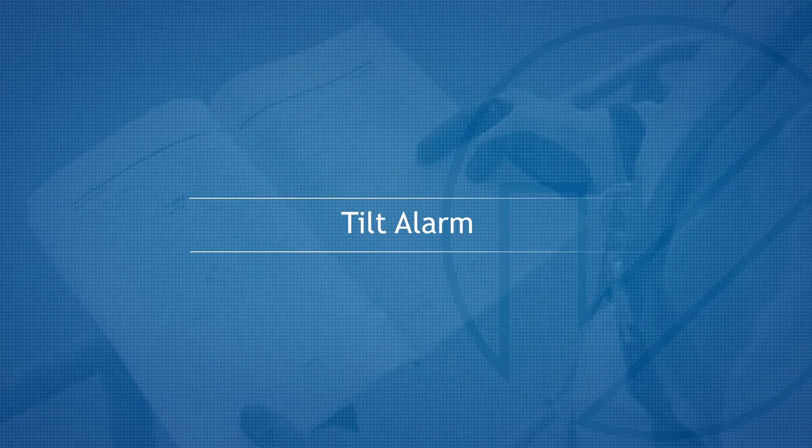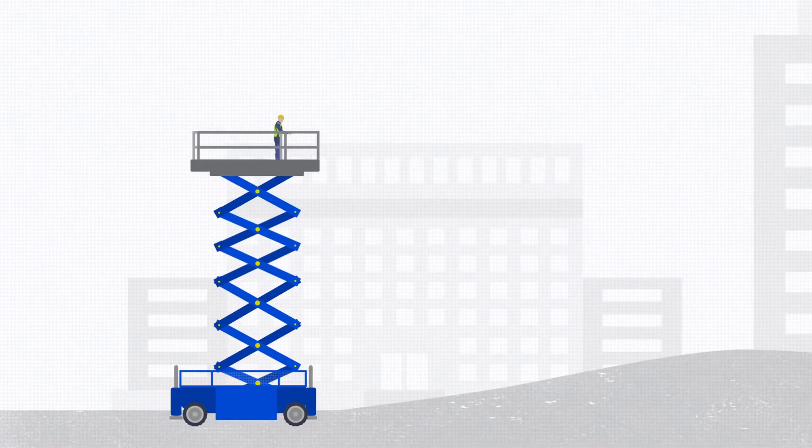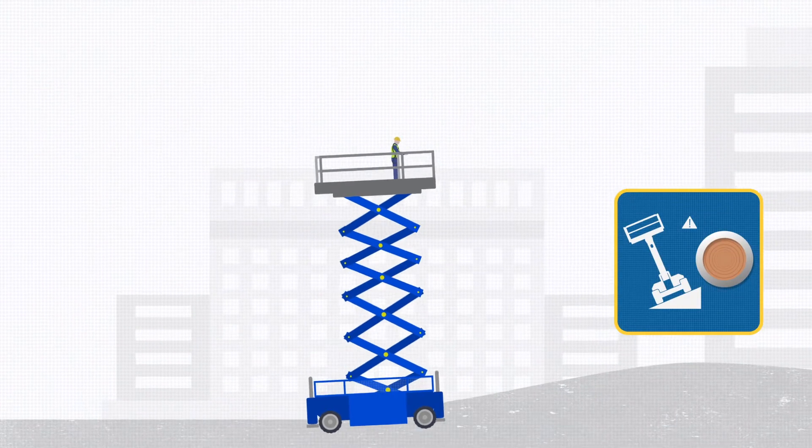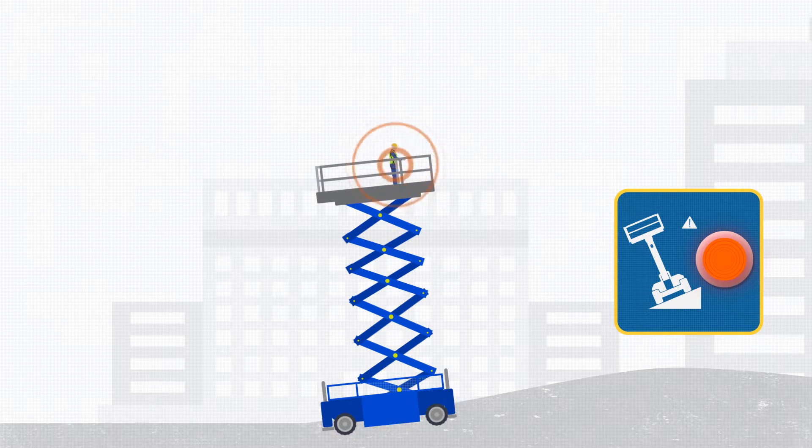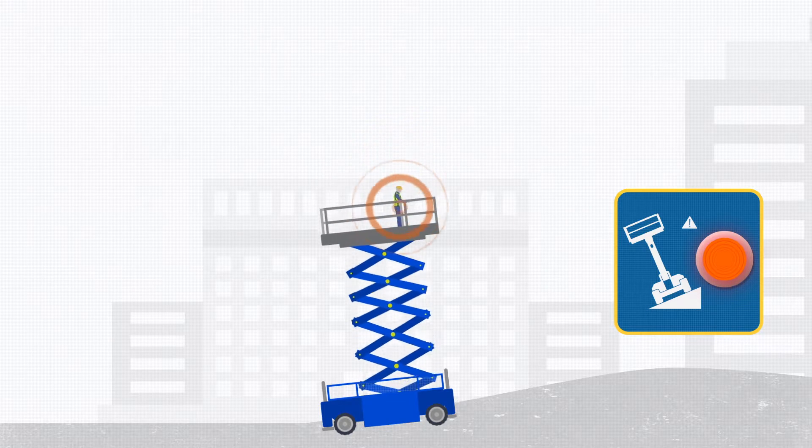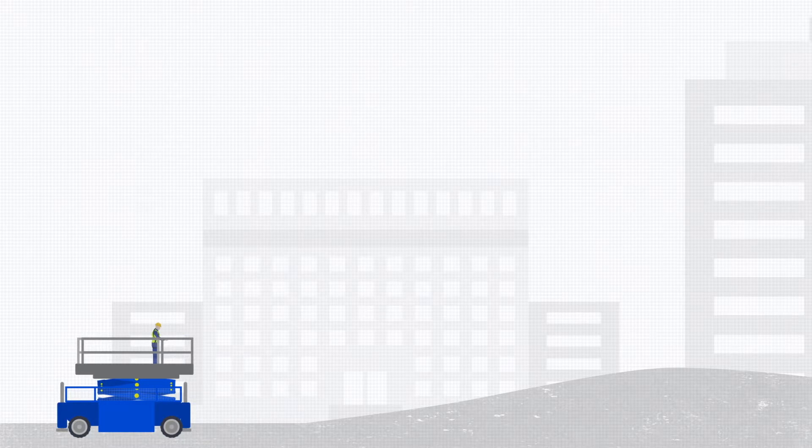Tilt alarm: This machine is fitted with an alarm which will sound only when the machine is operating on a slope. Do not depend on the tilt alarm as a level indicator. If the tilt alarm sounds when the platform is raised, use extreme caution to lower the platform. Once fully stowed, move the machine to a firm, level surface before raising the platform again.